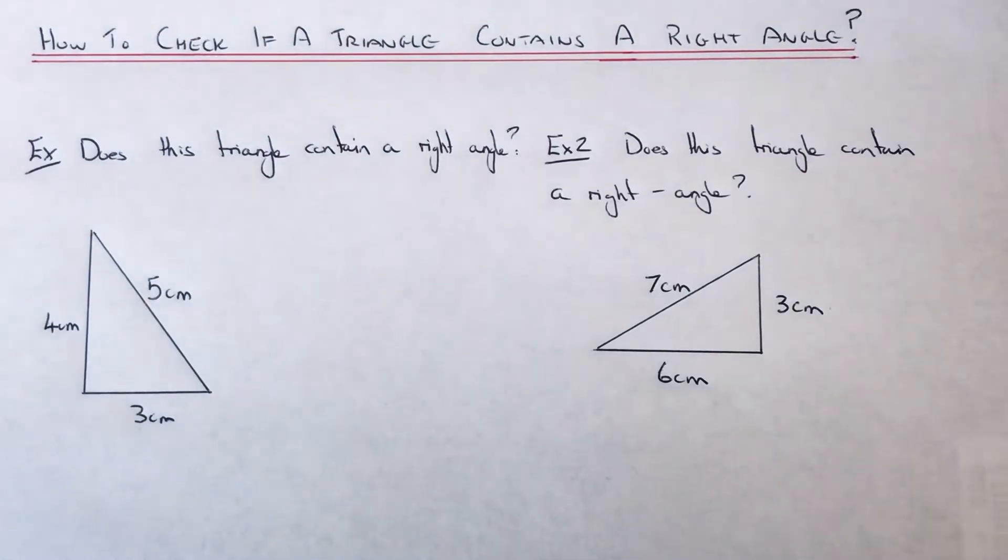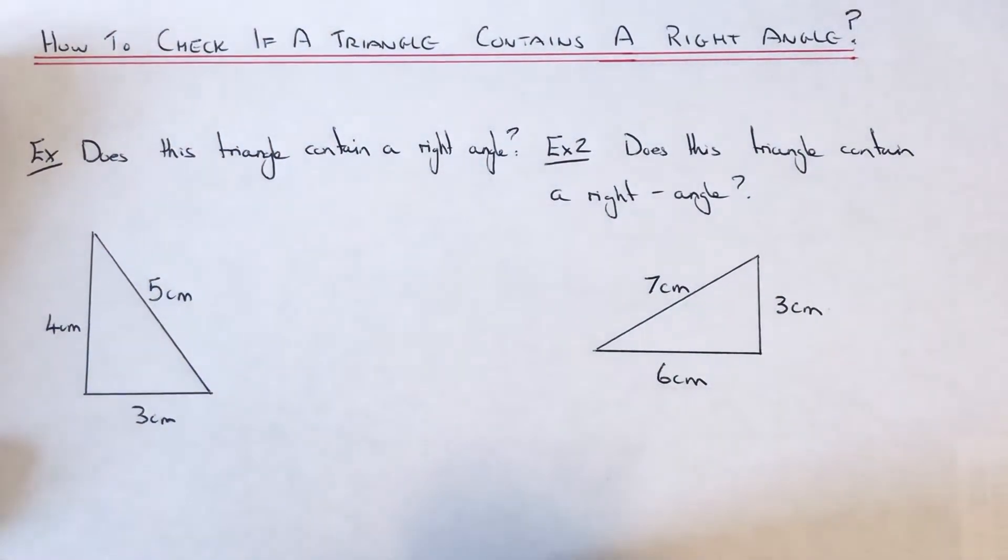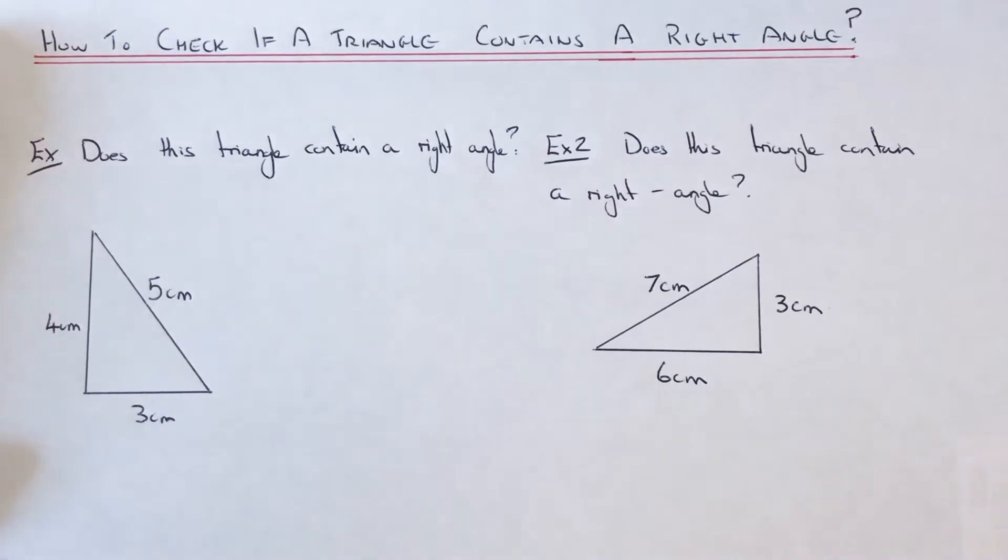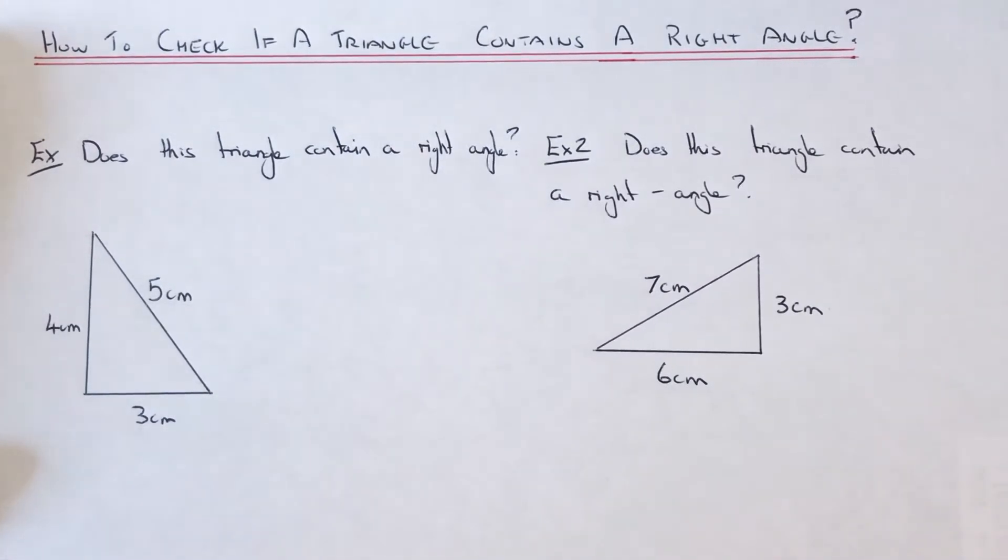Hi guys, welcome back. This is Maths 3000. I'm going to show you how to check if a triangle is a right angle triangle if you're given three side lengths of the triangle. The way you do this question is to do Pythagoras, because Pythagoras will only work in right angle triangles.